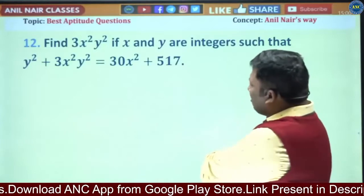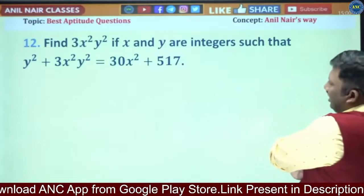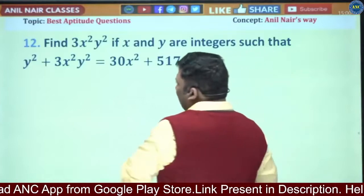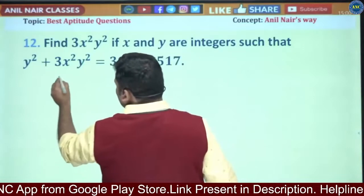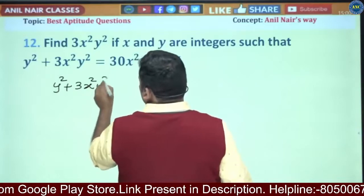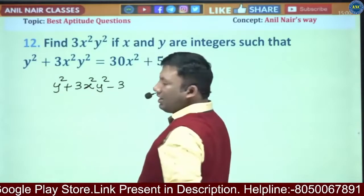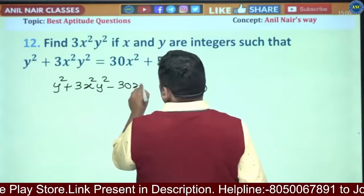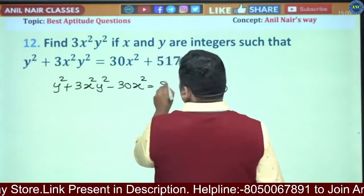Find 3x²y² if x and y are integers such that... Let me write all the variables to one side: y² + 3x²y² - 30x² is equivalent to 517.